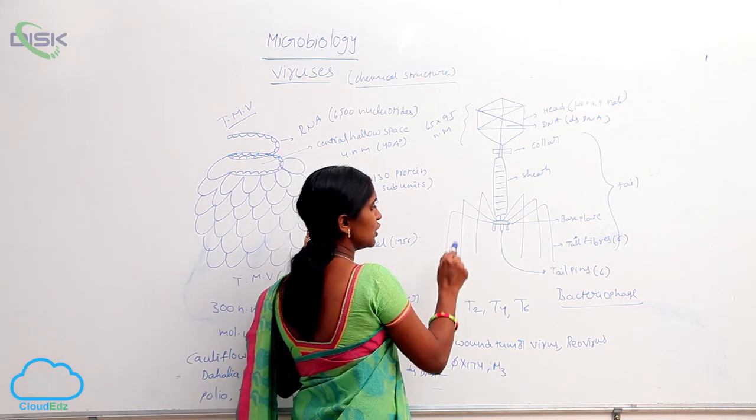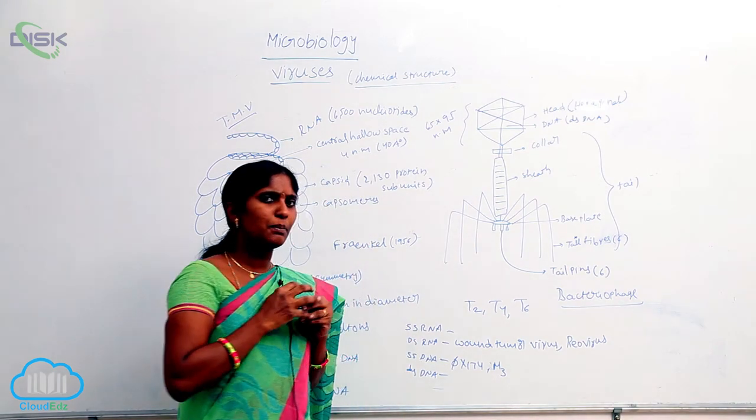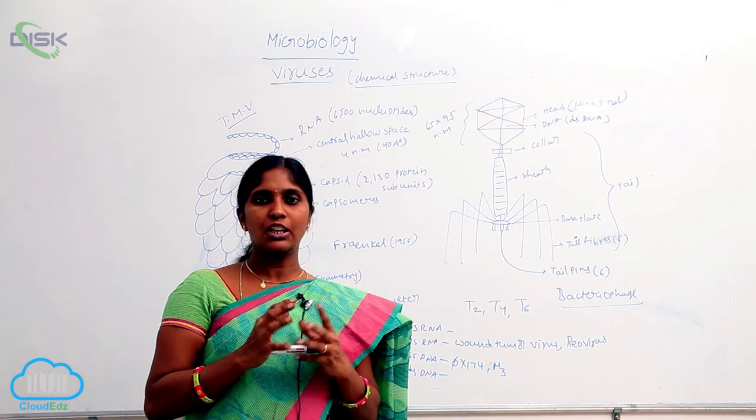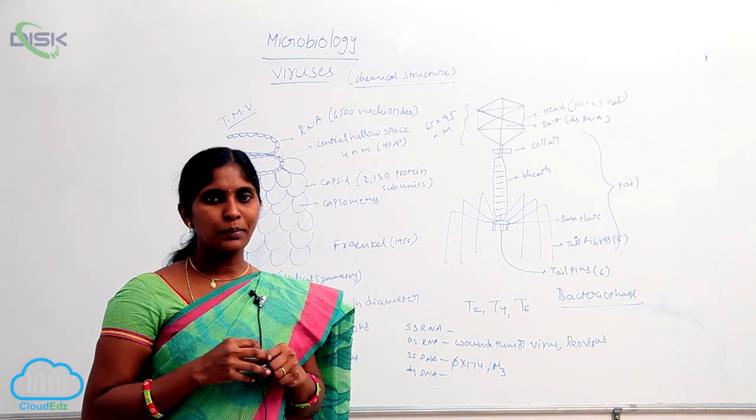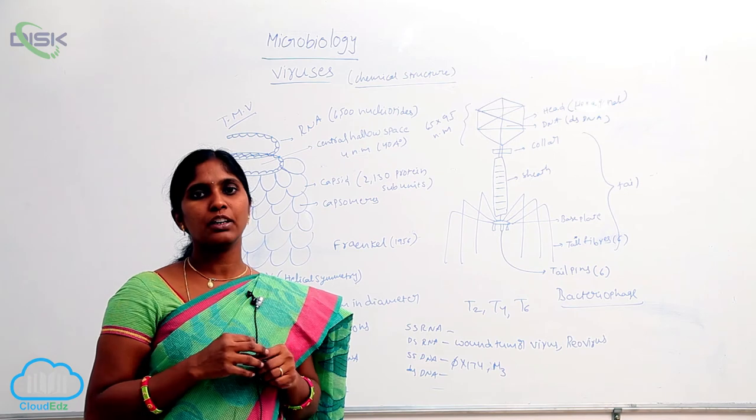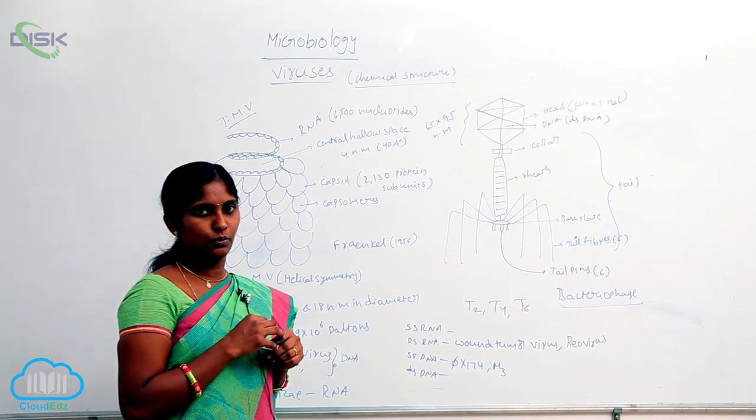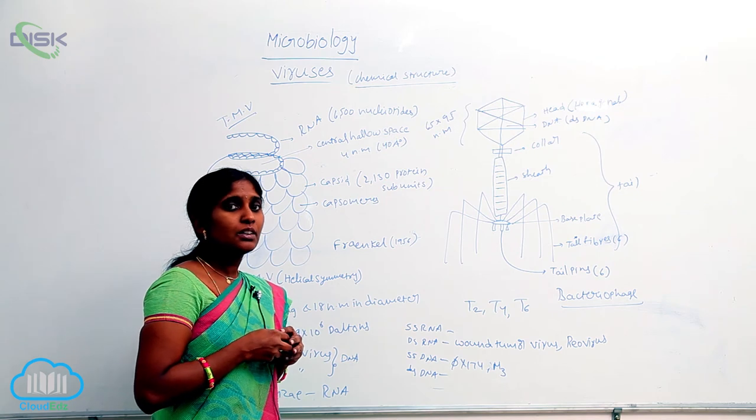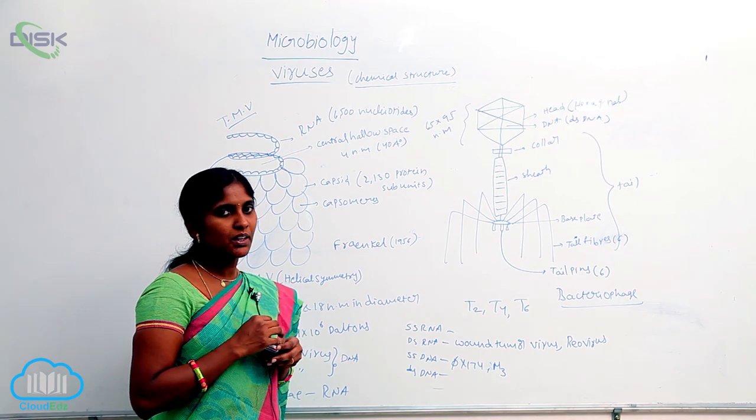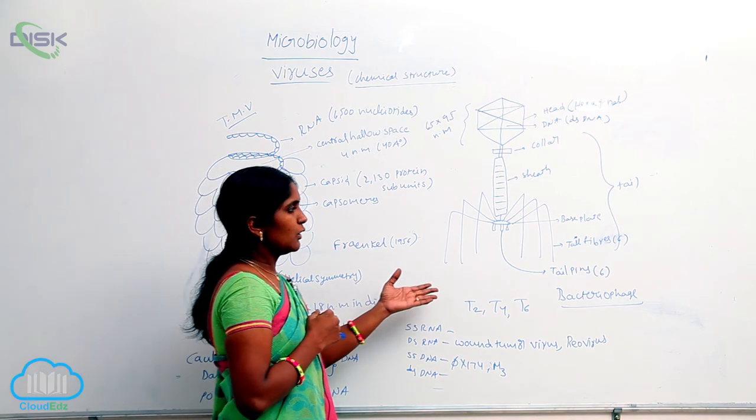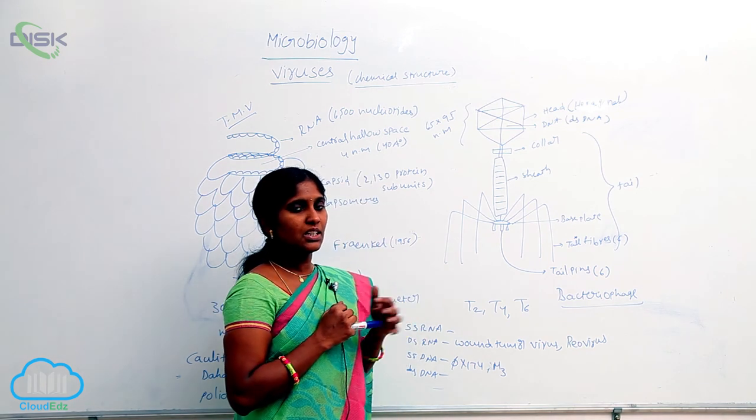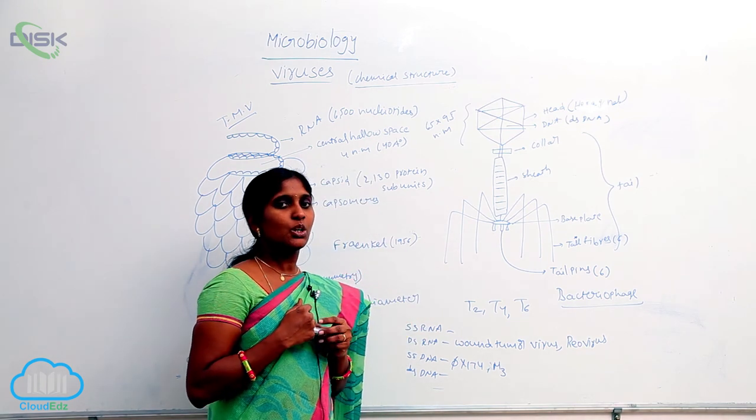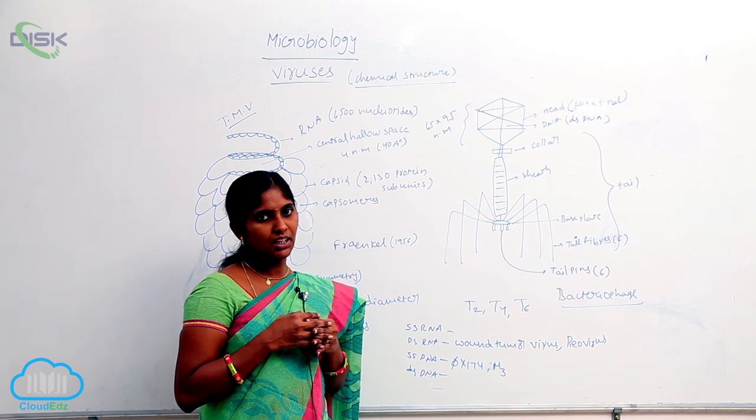So, this is the structure of bacteriophages. Generally, the bacteriophages are even number. T2 bacteriophage, T4 bacteriophage, T6 bacteriophage. The structure of bacteriophages are tadpole shape. So, here bacteriophage structure, T2 bacteriophage structure we are seeing. That is given by Hershey and Chase.